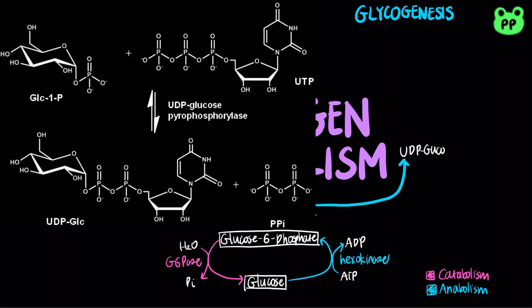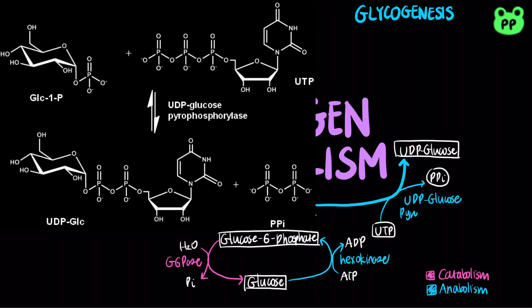Then, glucose-1-phosphate is condensed with uridine triphosphate into a sugar nucleotide, uridine diphosphate glucose, or UDP-glucose, releasing inorganic pyrophosphate. This condensation reaction is carried out by the enzyme UDP-glucose pyrophosphorylase, which is named for the reverse reaction.